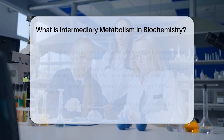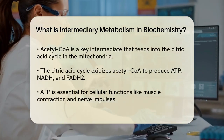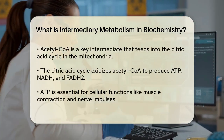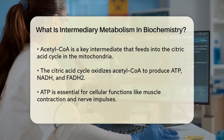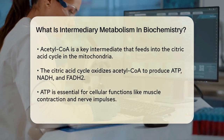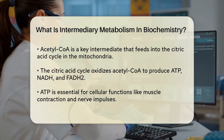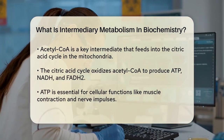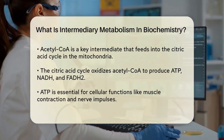These basic substances then enter various metabolic pathways. For instance, glucose from carbohydrates can enter the glycolytic pathway, where it is converted into pyruvate, and then further into acetyl-CoA, a key intermediate that feeds into the citric acid cycle – also known as the Krebs cycle or TCA cycle – in the mitochondria.